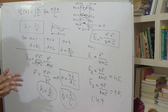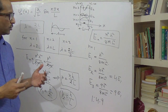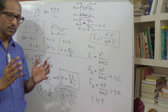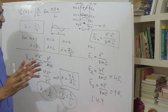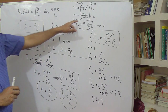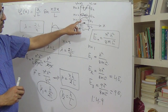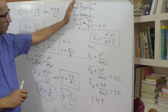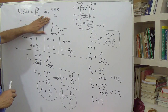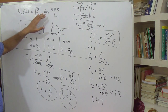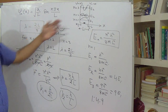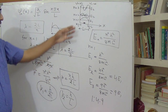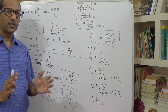So this free particle in a potential box demonstrates both the application of the Schrödinger equation and the idea of de Broglie wavelength. The energy states E₁, E₂, E₃ are discrete — energy levels are quantized. The normalized wave function allows us to find the probability of the particle, and the wavelength and momentum of the particle in different energy states n=1, 2, 3 can be determined.